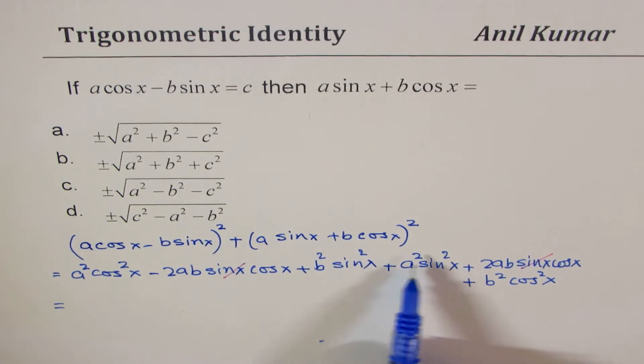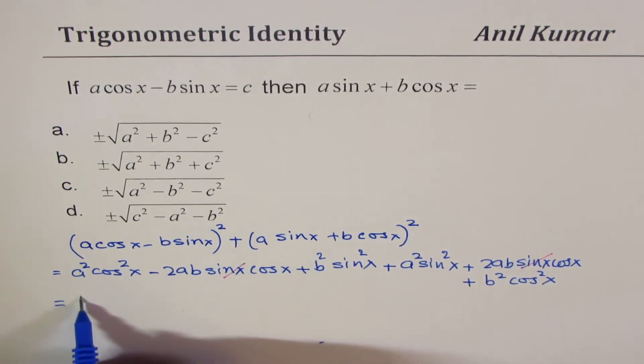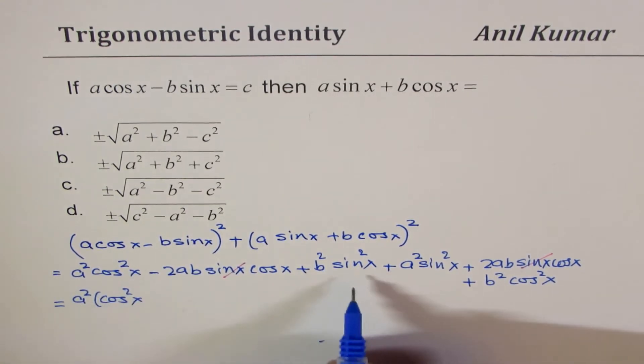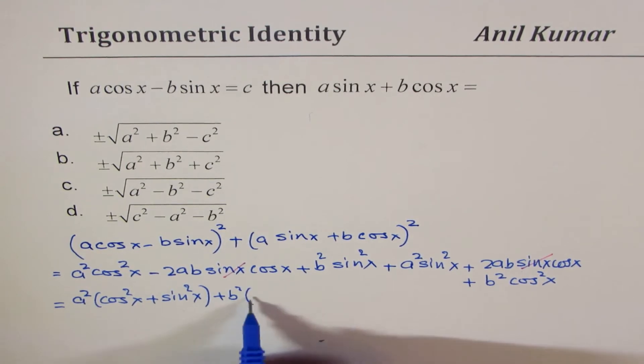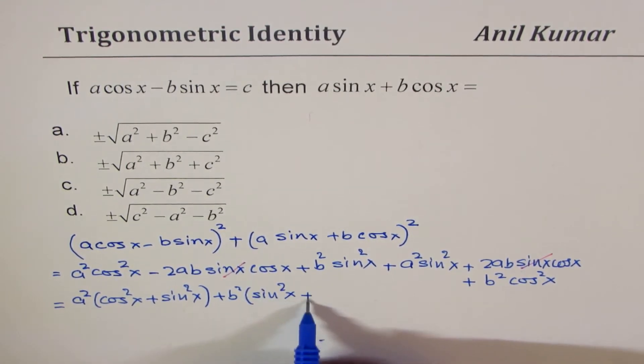So we can combine these terms and then write down that we have, if I take A square common, I get cos square x plus sin square x. And if I take B square common, I get sin square x plus cos square x.